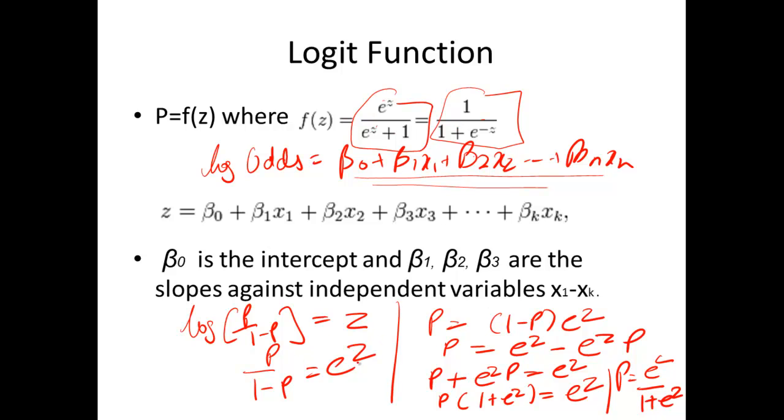And here we just solved it using normal algebra, where probability is simply e raise to power z over 1 plus e raise to power z, z being the logistic regression equation that we just covered.